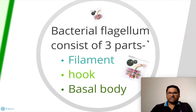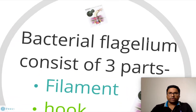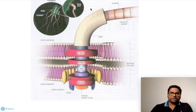Flagella consists of three parts: the filament, the hook, and the basal body. You can see the structure here — zooming in, this particular portion is called the filament, and this portion is called the hook.